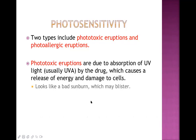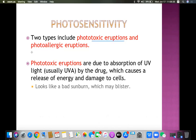The last part of this lecture covers photosensitivity rashes, which have two types. Phototoxic eruptions are due to absorption of ultraviolet A light by a drug accumulated on the skin and subcutaneous area. After absorbing the ultraviolet light, the drug releases energy that damages the cell. Phototoxic eruptions look like sunburn and sometimes blisters develop.